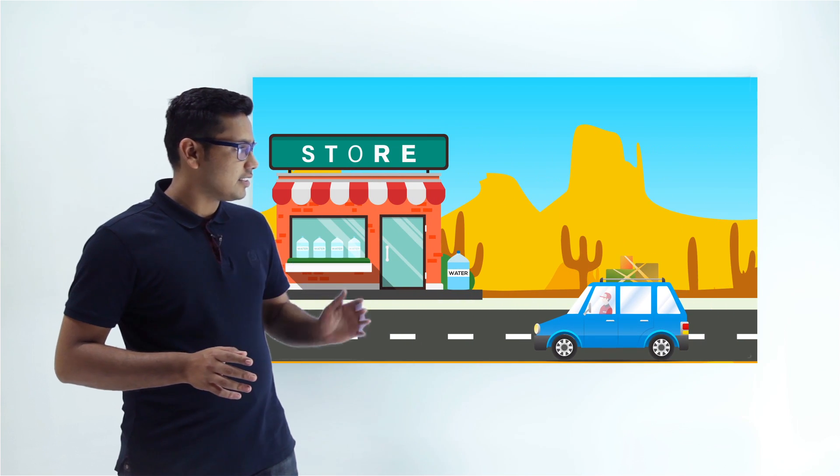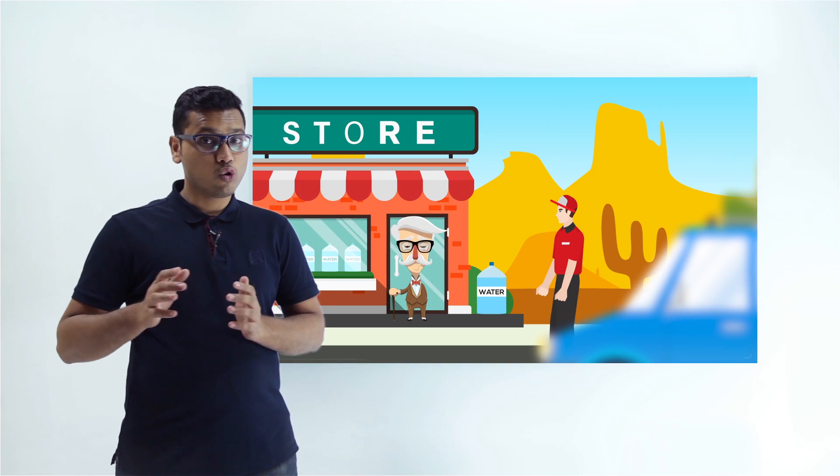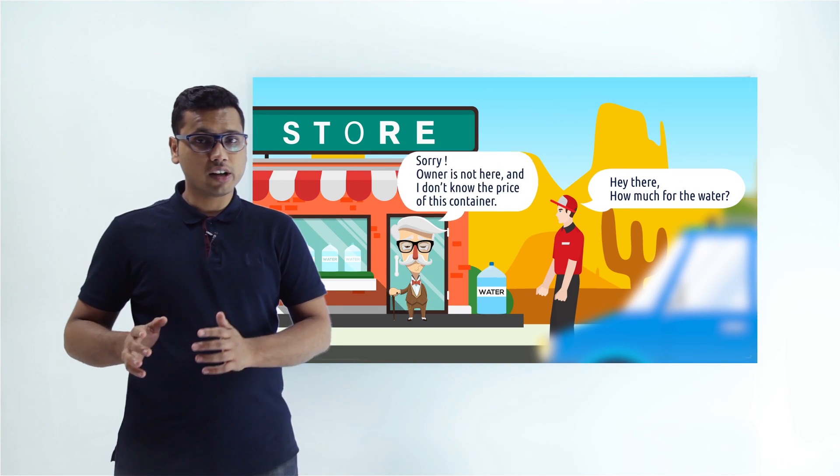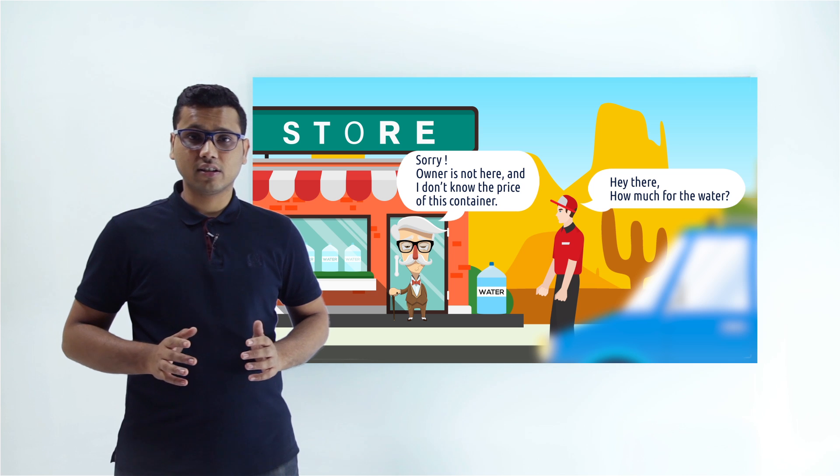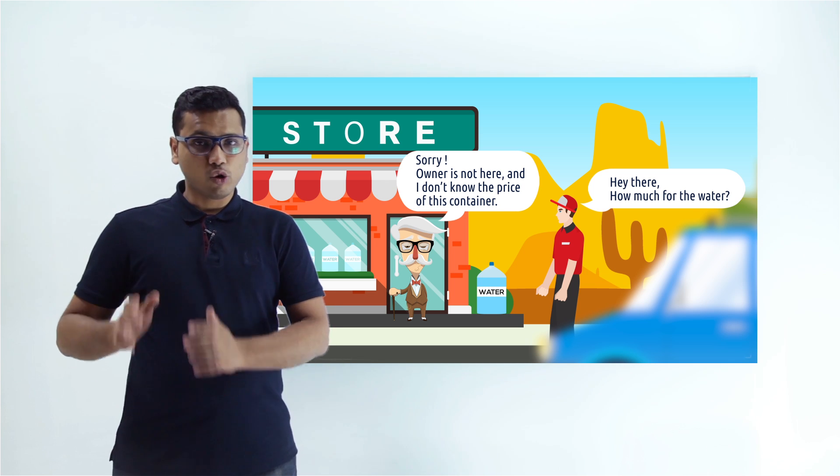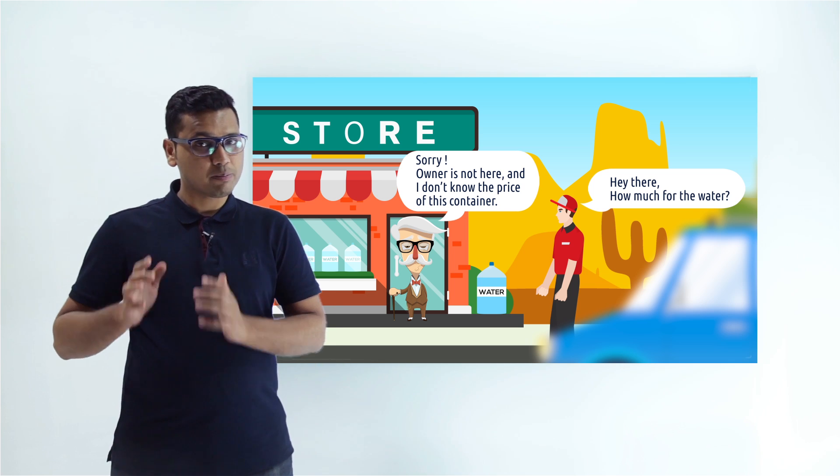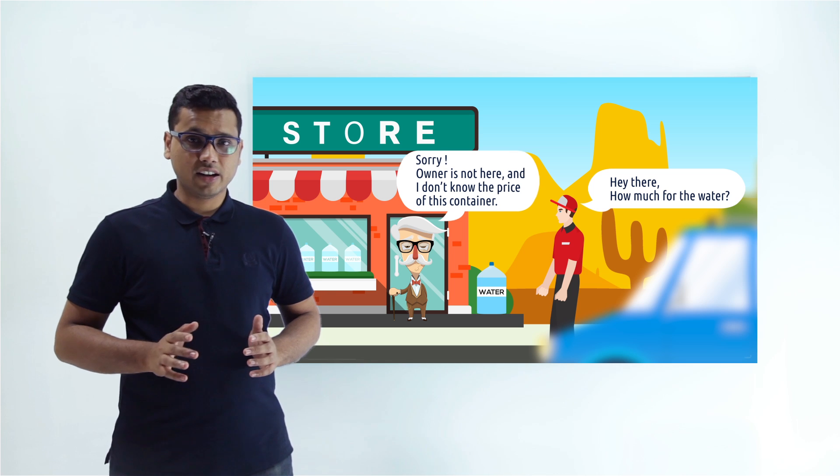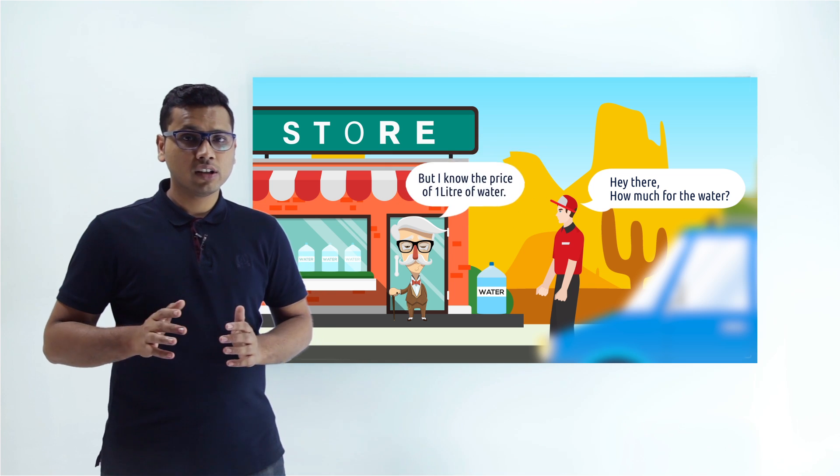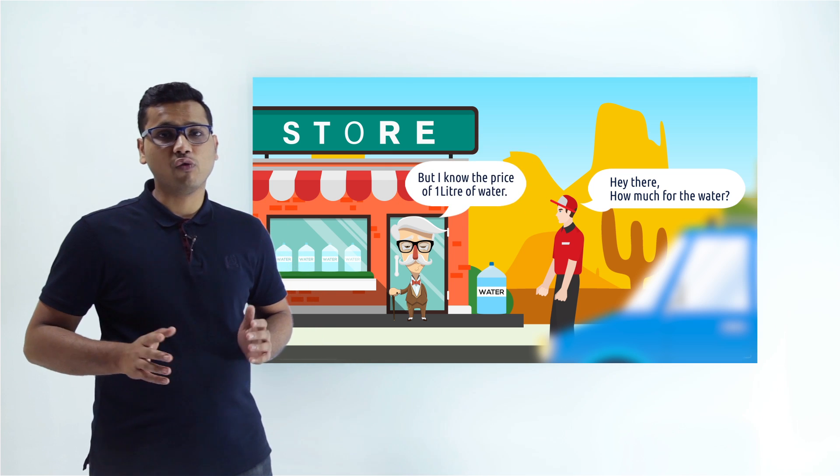You are crossing a desert in Rajasthan and you need water for drinking. You find a shop in the desert and the problem is that there is an old man and the owner of the shop is not present there. So this old man doesn't know the price of the container, rather he knows the price of one liter of water.